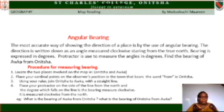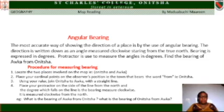Angular Bearing. The most accurate way of showing the direction of a place is by the use of angular bearing. The direction of a place is written down as an angle measured clockwise from the true north. Bearing is expressed in degrees, and a protractor is used to measure the angles in degrees.